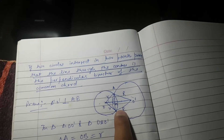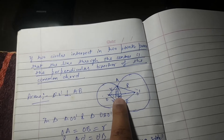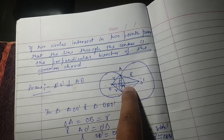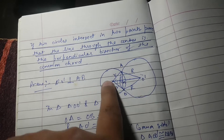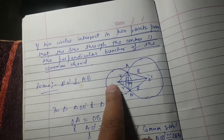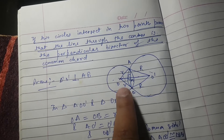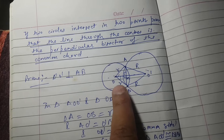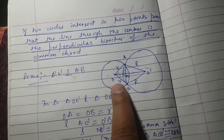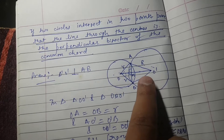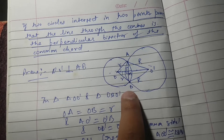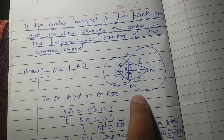So this angle is 90 degrees, and this angle will also be equal to 90 degrees — all the angles at M are equal to 90 degrees. This means the line joining the centers of the two circles is the perpendicular bisector of the common chord.